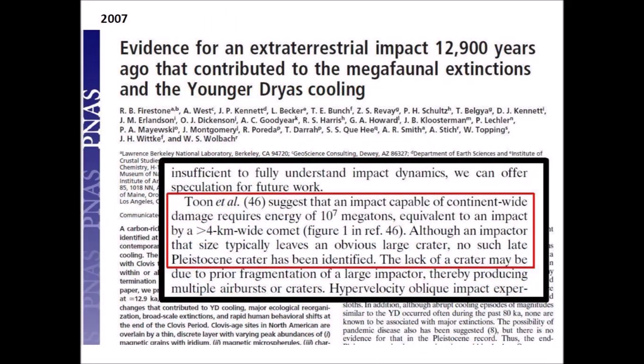A 2007 paper by Richard Firestone and 25 co-authors introduced the Younger Dryas impact hypothesis and proposed that an extraterrestrial impact over North America 12,900 years ago contributed to the megafauna extinctions and the Younger Dryas cooling. The paper stated that the evidence pointed to an extraterrestrial event with continent-wide effects, especially biomass burning, but that the size, density, and composition of the impactor were poorly understood.